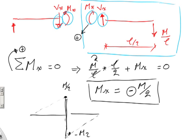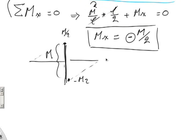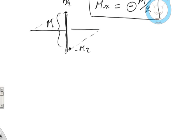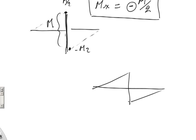So finally, the moment diagram rises linearly from zero at A to positive M over 2 just before mid span, then jumps down to negative M over 2 just after mid span due to the concentrated moment, and returns linearly to zero at B. That's it — I hope you guys learned something.